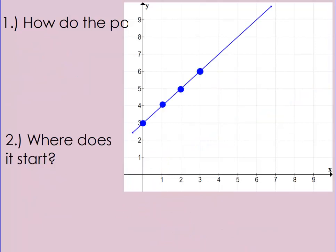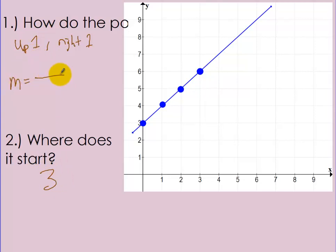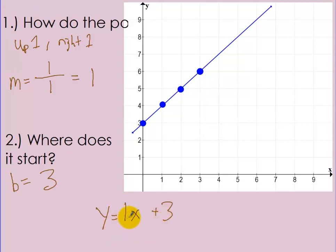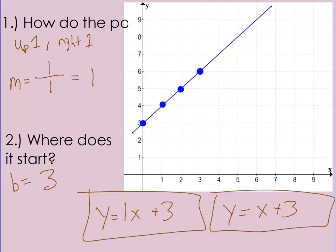Let's look at a different one. How does the point change? It went up 1 and right 1. And where does it start? It started at 3. So m is 1 over 1, which we can write as just 1. b equals 3. So the equation is y equals 1x plus 3. You don't even need to write the 1, so you can just write y equals x plus 3. Either of those is your rule for the equation.